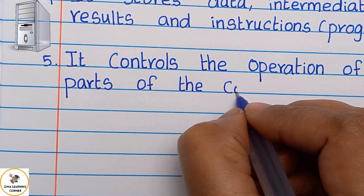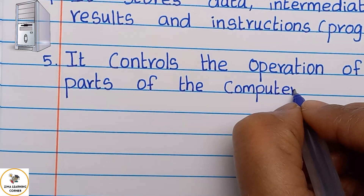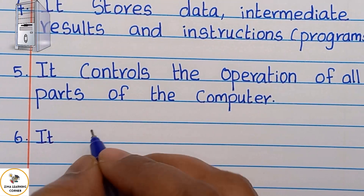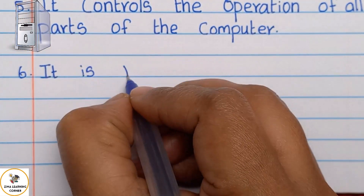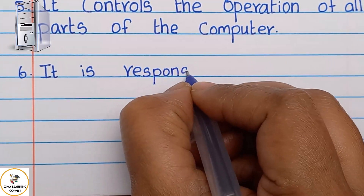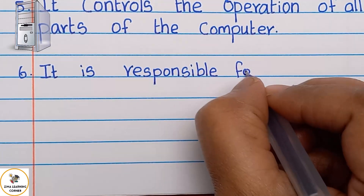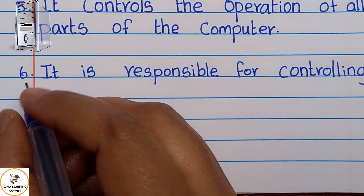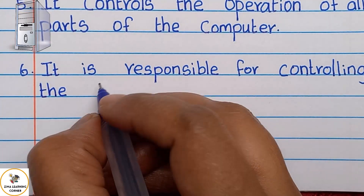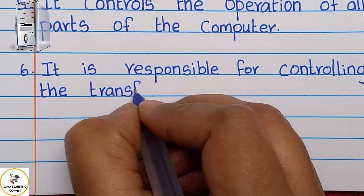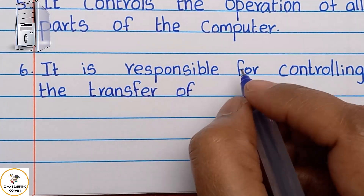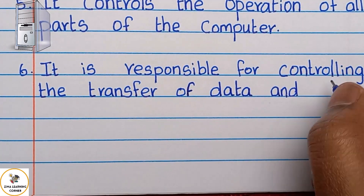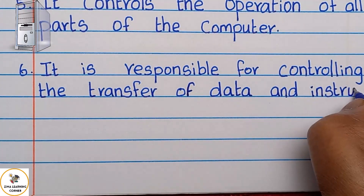Point number five: It controls the operation of all parts of the computer. Point number six: It is responsible for controlling the transfer of data and instructions.